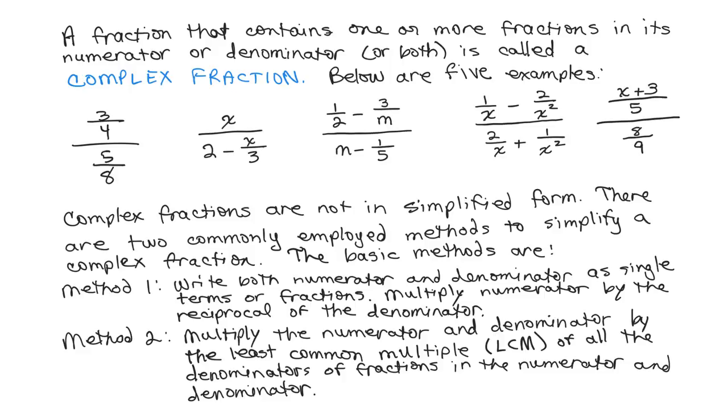In my example, the very first one is in that form, so method one works very well for that. For the rest of them, method two is actually easier for most people. You multiply the numerator and denominator of the complex fraction by the least common multiple of all the denominators of fractions in the numerator and denominator. And this eliminates the complex fraction in the first step.